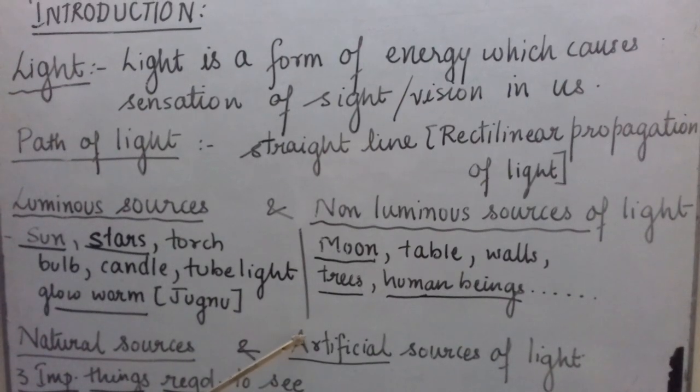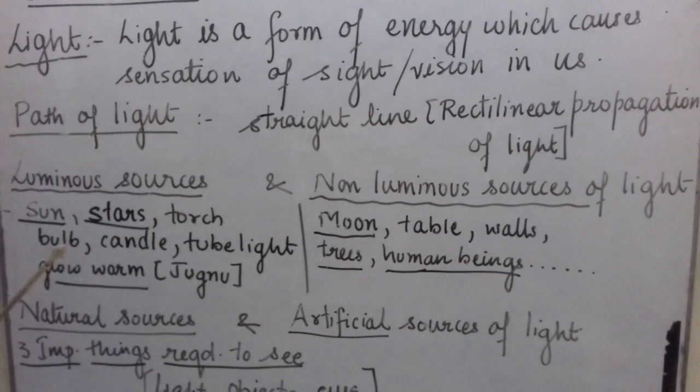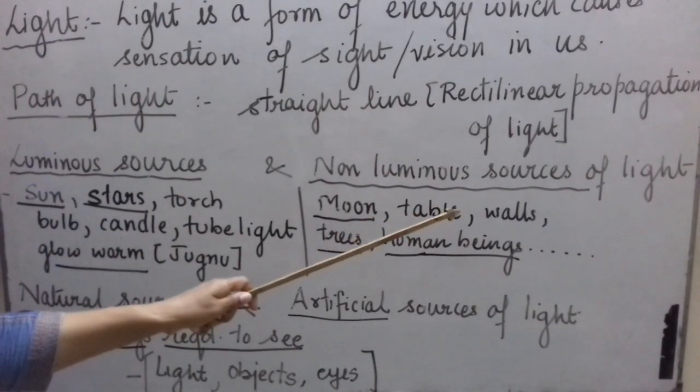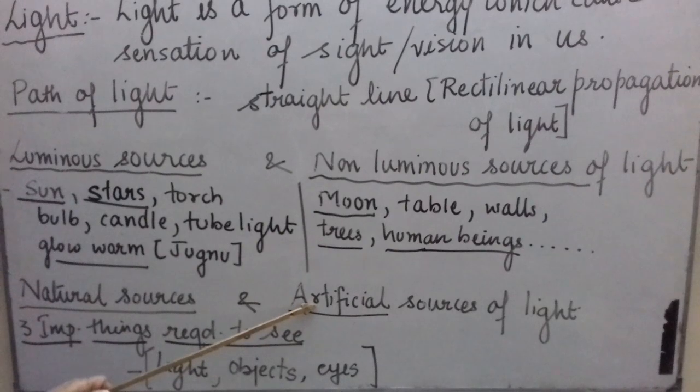Artificial sources of light are the sources of light which are man-made. So, torch, bulb, candle, tube light, table, walls and other objects in the surroundings which are man-made are called artificial sources of light.